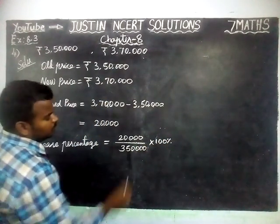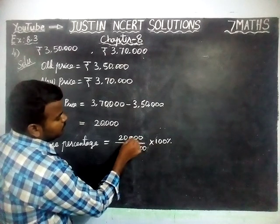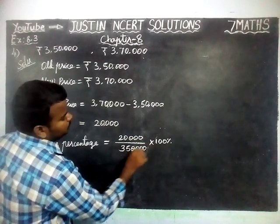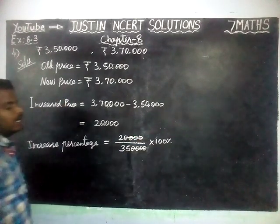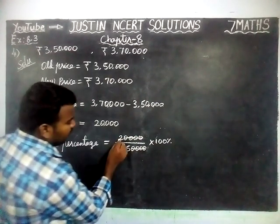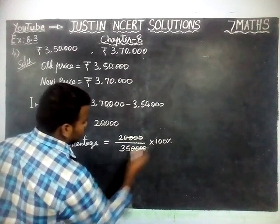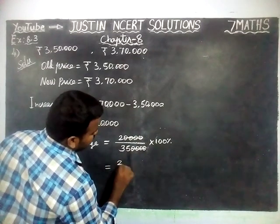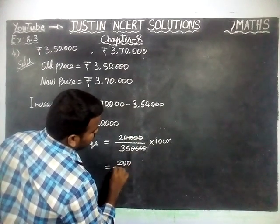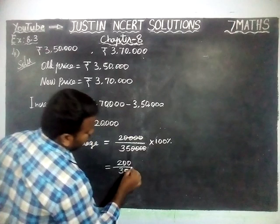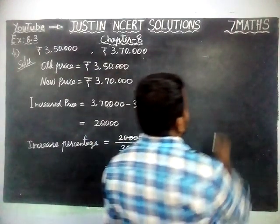Now, 1,2,3,4 zeros in 20,000 and 1,2,3,4 zeros in 3,50,000 — the 4 zeros get cancelled. Next, we will multiply these 2: 2 into 100 is equal to 200, divided by 35.